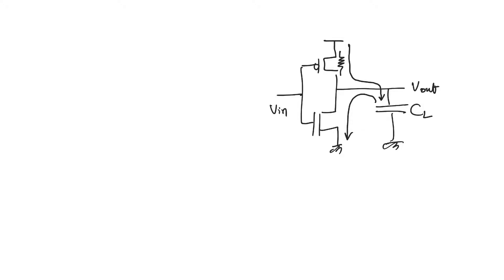The PMOS has a finite channel resistance R_P and the NMOS has a finite channel resistance R_N. If current flows through a resistance, there's going to be power dissipation — it doesn't matter if the current is transient or steady state, and it doesn't matter if the resistance is linear or nonlinear. The flow of current in a resistance causes power dissipation. This kind of power dissipation, which happens as we are charging and discharging the capacitance, is called dynamic power.